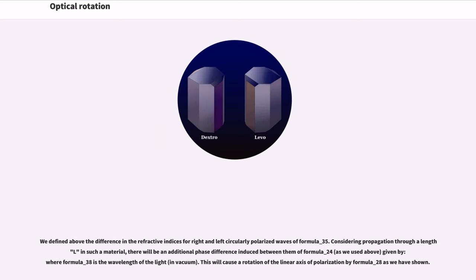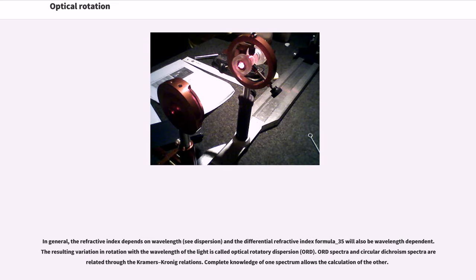We defined above the difference in the refractive indices for right and left circularly polarized waves, considering propagation through a length L in such a material, there will be an additional phase difference induced between them given by the equation where lambda is the wavelength of the light. This will cause a rotation of the linear axis of polarization as we have shown. In general, the refractive index depends on wavelength and the differential refractive index will also be wavelength dependent. The resulting variation in rotation with the wavelength of the light is called optical rotatory dispersion. ORD spectra and circular dichroism spectra are related through the Kramers-Kronig relations. Complete knowledge of one spectrum allows the calculation of the other.